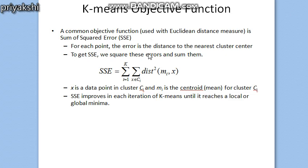For each point, the error is the distance to the nearest cluster center. To get the SSE we square these errors and then sum them up, as you can see in the formula. Given two different sets of clusters produced by two different runs of K-means, we prefer the one with the smallest squared error, since this means that the centroids are a better representation of the points in their cluster.